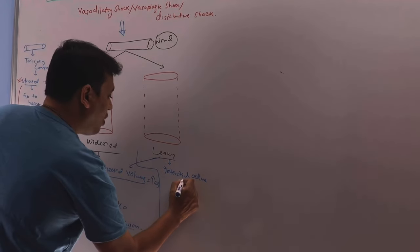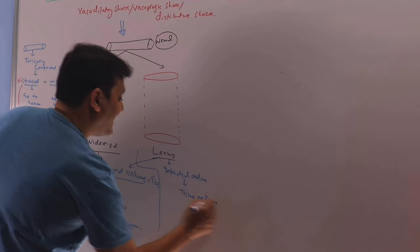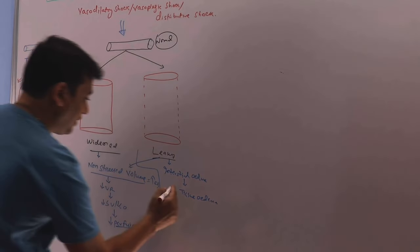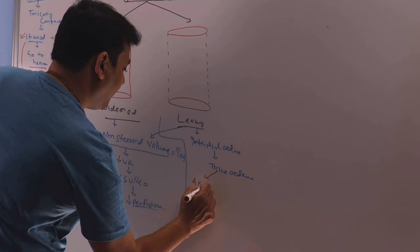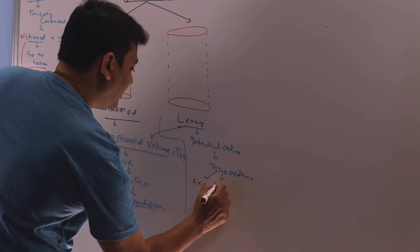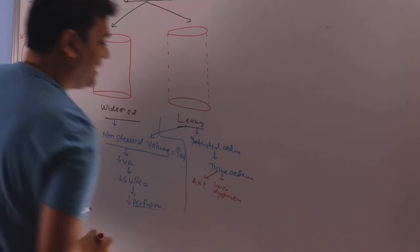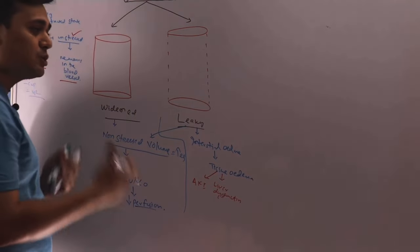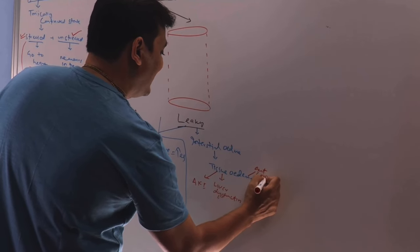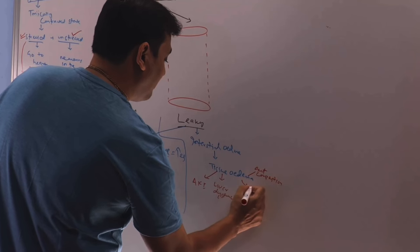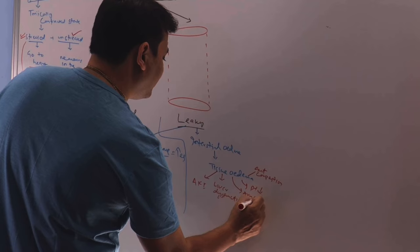In this interstitial edema, it will cause tissue edema. And tissue edema at different places will cause different manifestations. In the kidney, it will cause AKI. In the liver, liver dysfunction. So whenever there is tissue edema, remember that the tissue's normal function will be hampered. In the gut, gut congestion, ileus, there will be platelet decreased, thrombocytopenia, altered mental status, all these things will be there.